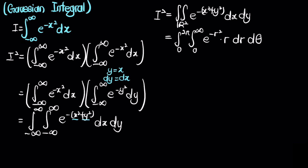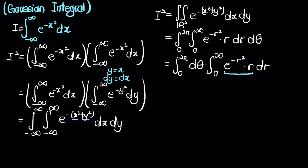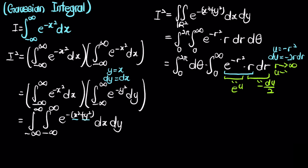We can separate this into two integrals: the integral from 0 to 2π dθ, times the integral from 0 to infinity of e to the negative r squared times r dr. This second integrand can be easily evaluated by a simple u-substitution where we let u equal negative r squared, so r dr equals negative du over 2, and e to the negative r squared becomes e to the u.